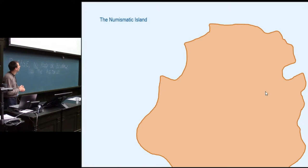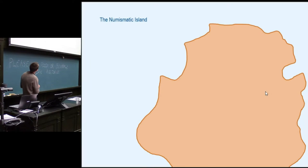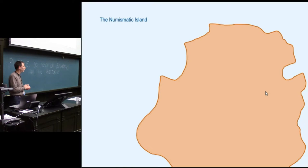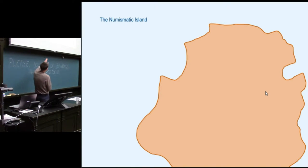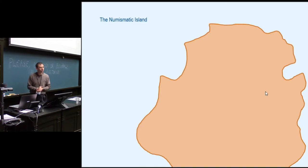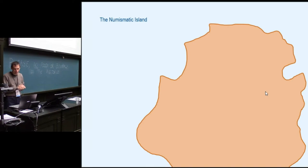Here we have a small picture — you see the brownish area, that's a numismatic island. You don't see the full scope of the island, because I cannot present the whole island; it would take too long and I'm probably not the right person to do so.